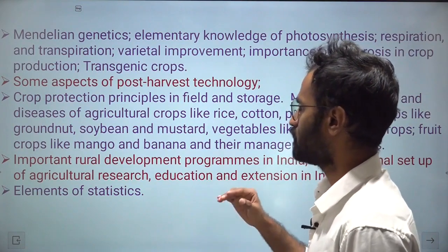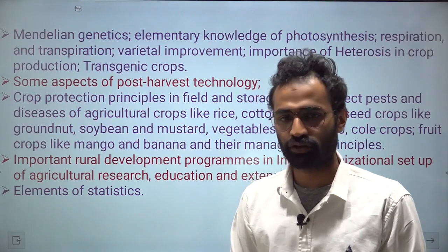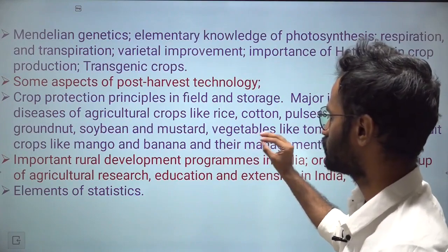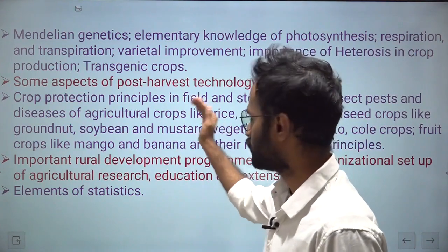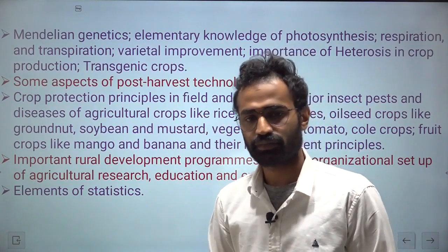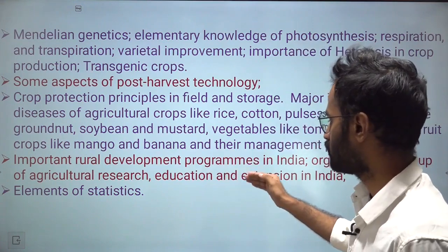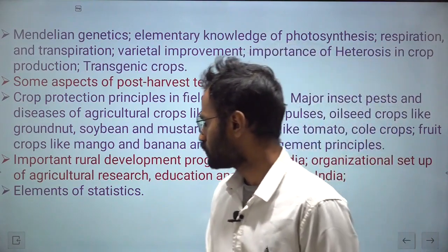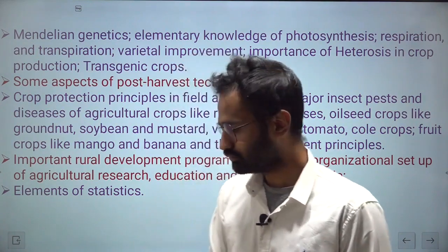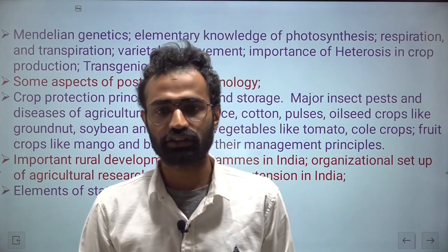From horticulture, there are aspects of post-harvest technology and crop protection principles in field and storage. From entomology and pathology, major insect pests and diseases of agricultural crops are included. Since you are preparing for entomology, you can focus on diseases rather than pests in this section. From extension, topics include rural development programs, organizational setup of agricultural research, education and extension in India, and elements of statistics. Statistics and agronomy play a major role in determining your rank, so give them more emphasis.